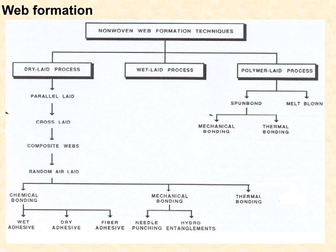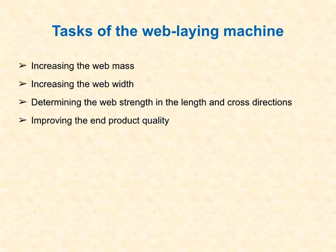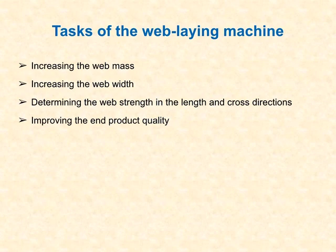After making the web, bonding can be done by chemical bonding, mechanical bonding, or thermal bonding. Chemical bonding is classified into three parts: wet adhesive, dry adhesive, and fiber adhesive. Mechanical bonding includes needle punching and hydro entanglement. The main objective of the web laying machine is to increase the web mass, increase the web width, determine web strength in lengthwise and crosswise directions, and improve end product quality.